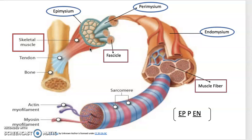The layers of connective tissue cover the muscles to support and protect the delicate muscle. These layers not only withstand the forces of contraction, but also provide pathways for the blood vessels and nerves.